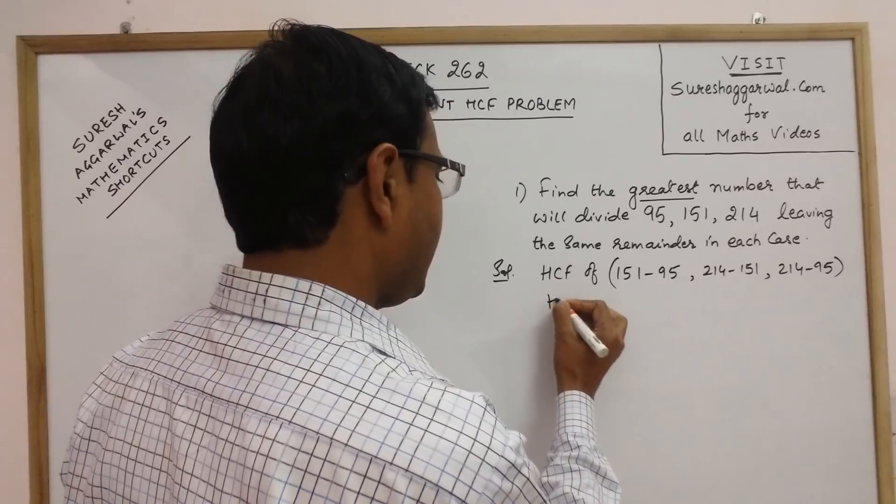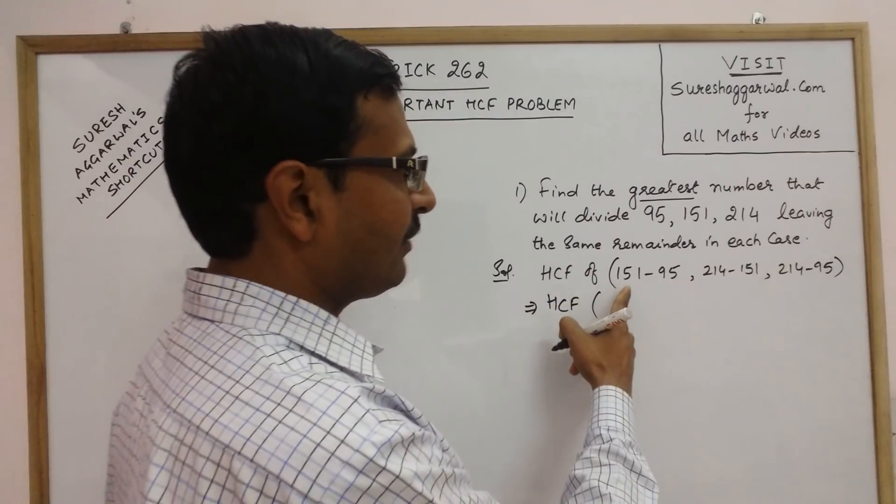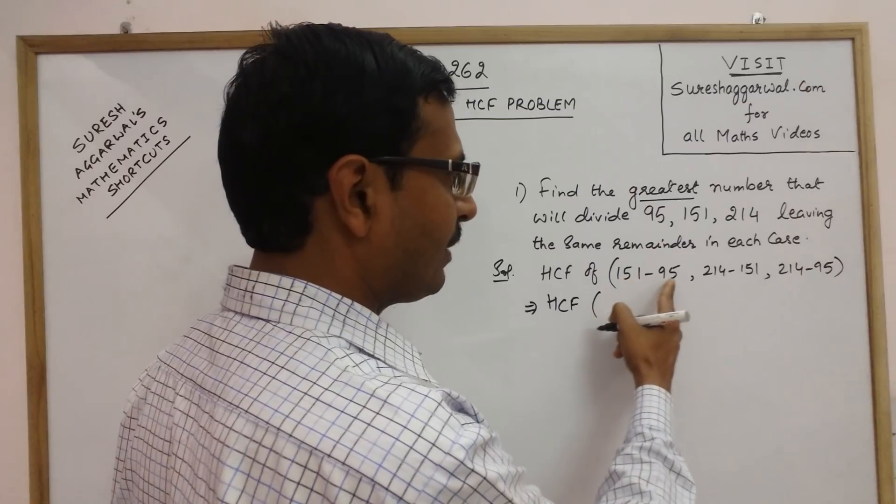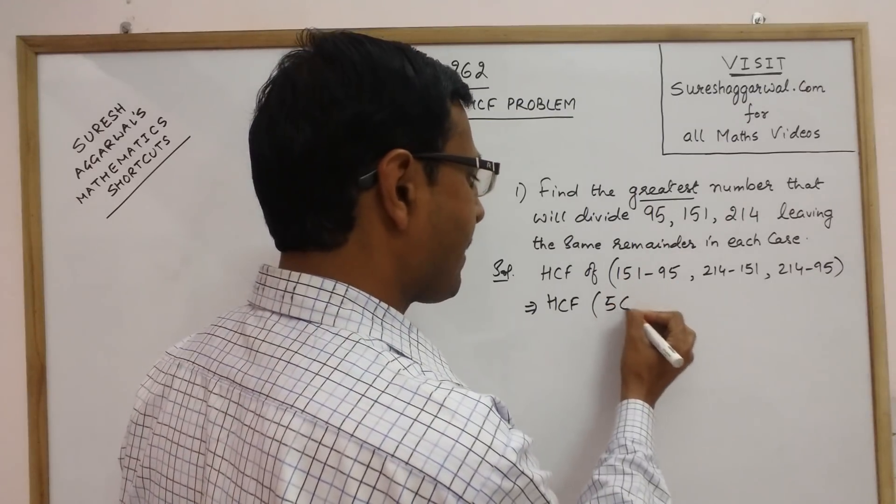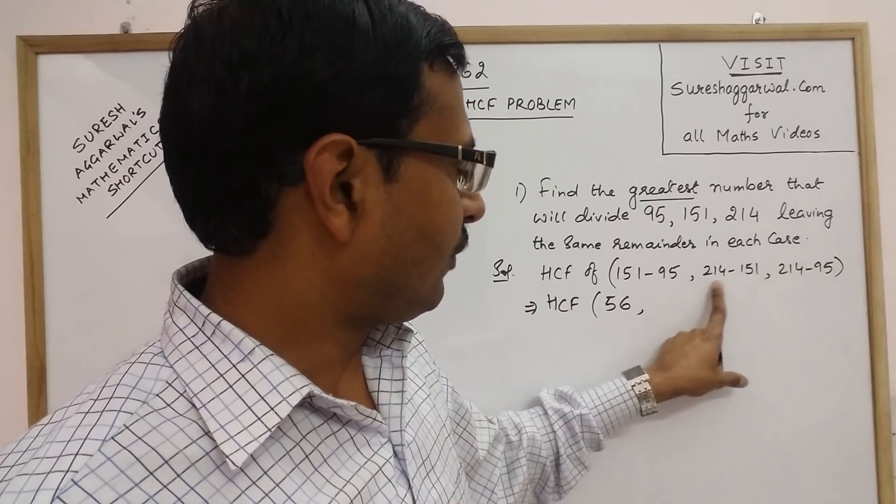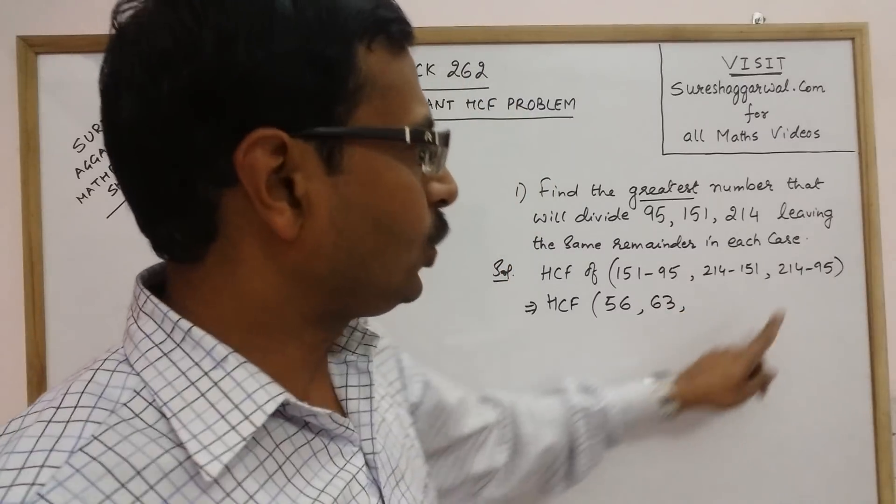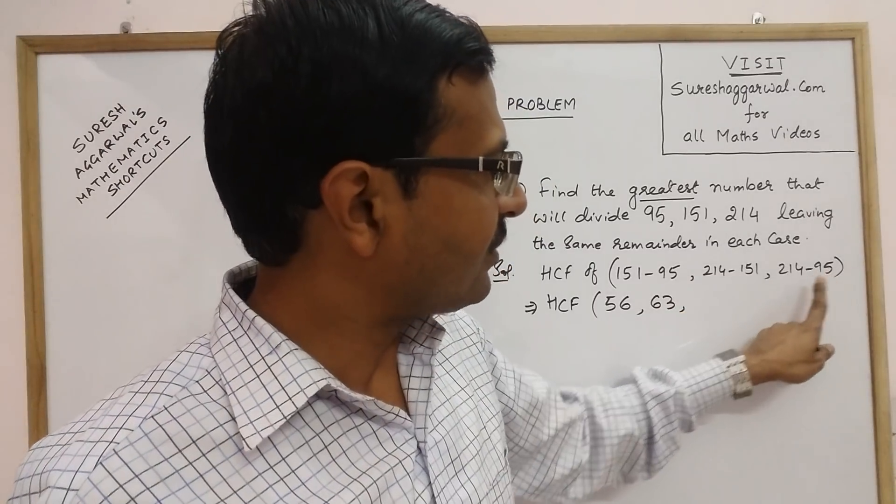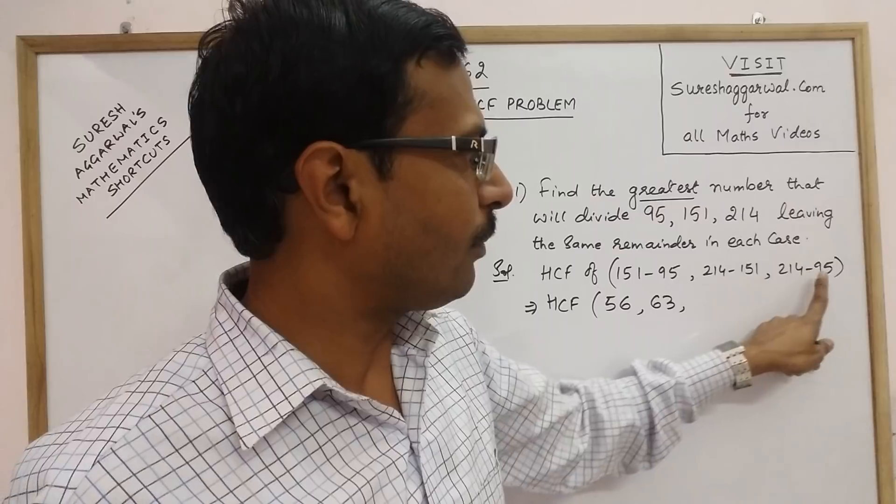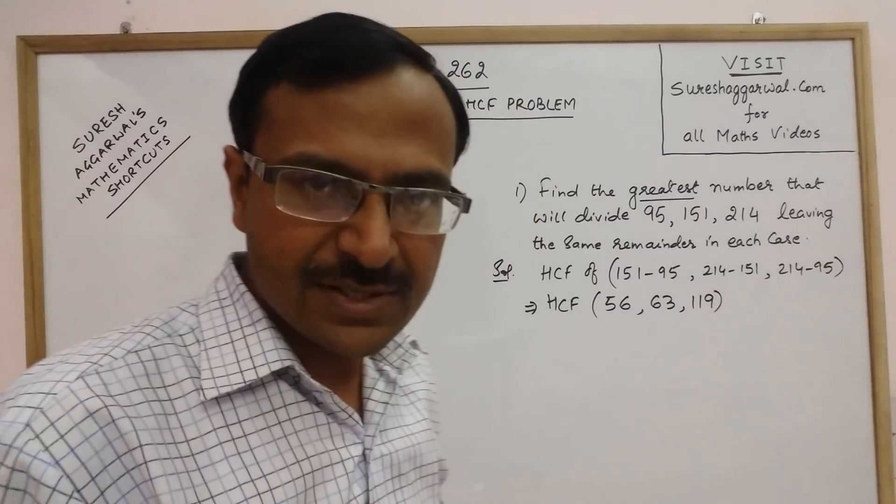We have to find the HCF of 151 minus 95, that is 56, 214 minus 151, that is 63, and 214 minus 95, that is 119. So these are the three differences.